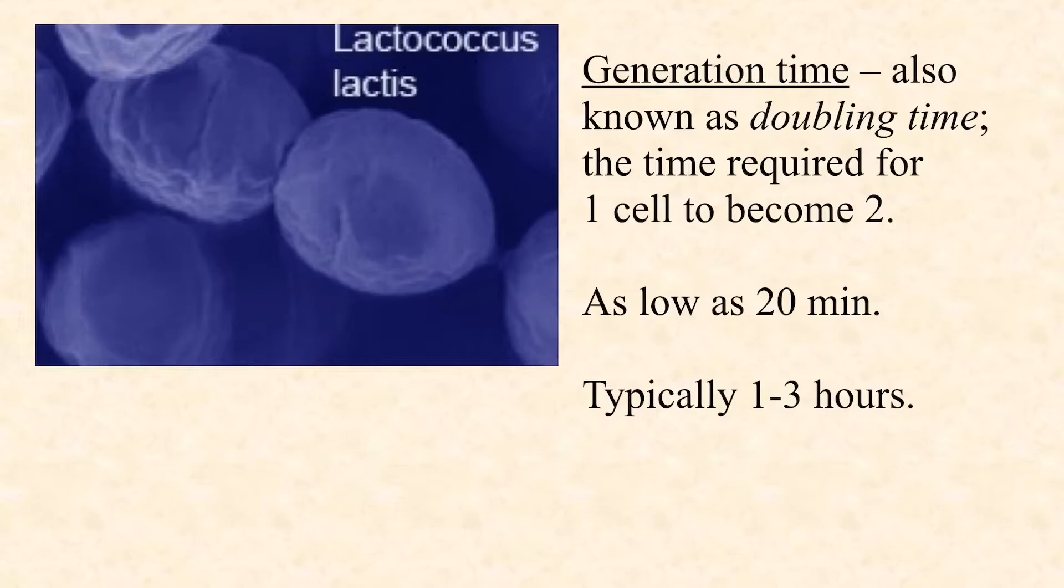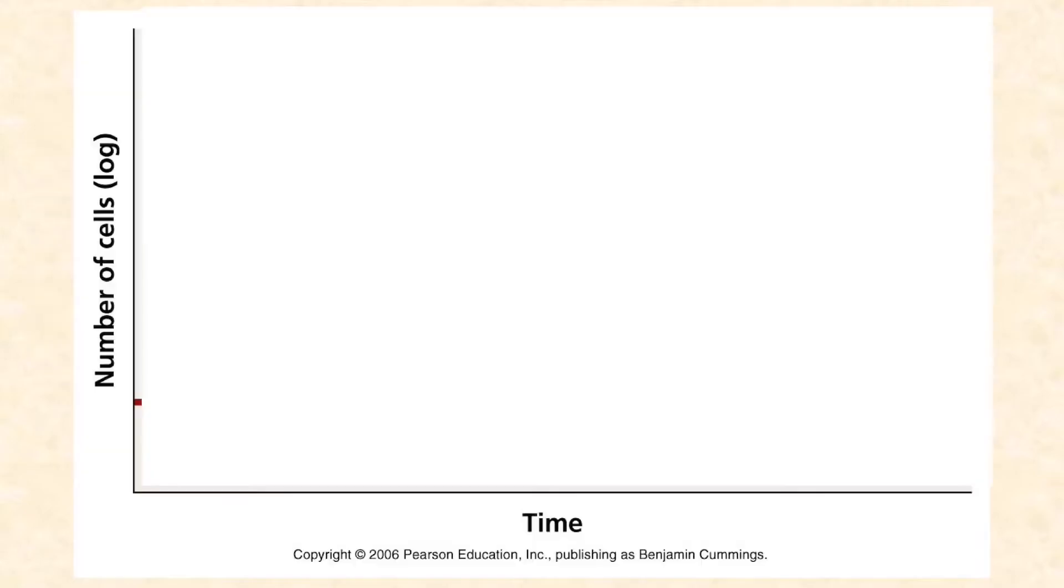Now that term doubling time means how long does it take to go through this entire process of binary fission. It's also called generation time, the time required for one cell to become two cells. It's an important concept. So if you've got one species that in an infection has a generation time of an hour, that means it's going to double every hour. And you've got another species with a generation time of 24 hours, that means it takes a whole day for every round of division to take place, and it's going to take much longer for the infection to develop. So understanding generation time of different species can be really useful for understanding the progress of an infection.